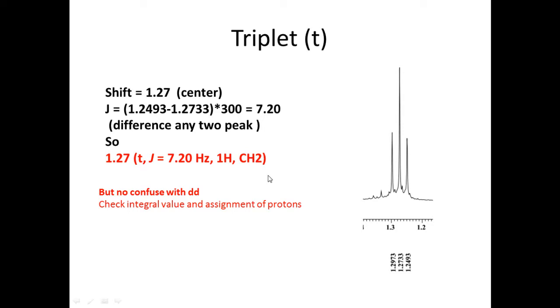This is a symmetrical triplet. No any distortion in triplet. The J value, any 2 you can take - this 2 minus this, minus this - into spectrometer frequency. Or you can use difference between here and there. Equal to the same.